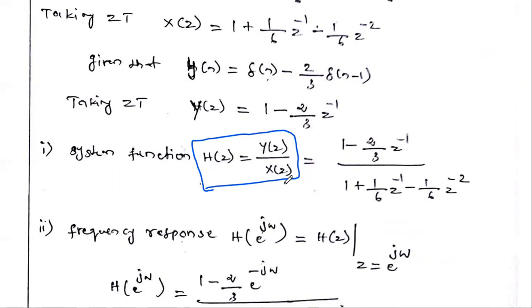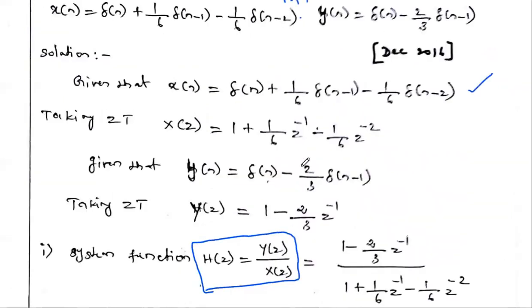We have to take the Z-transform of the above equation. What is the Z-transform of x(n)? Capital X(z) equals — what is the Z-transform of δ(n)? We already solved this in the fourth unit.